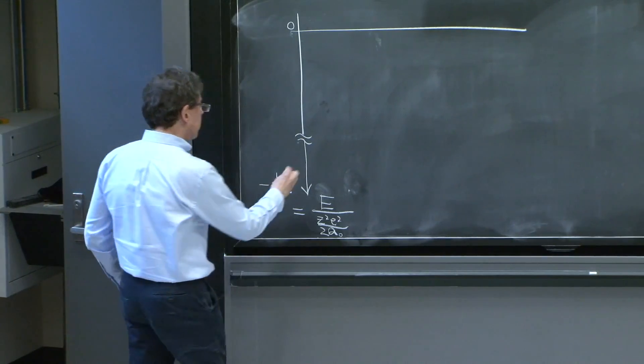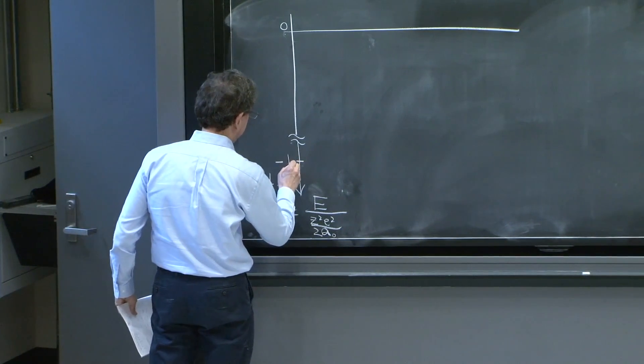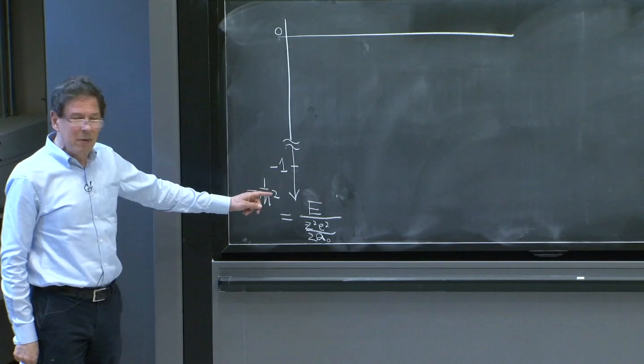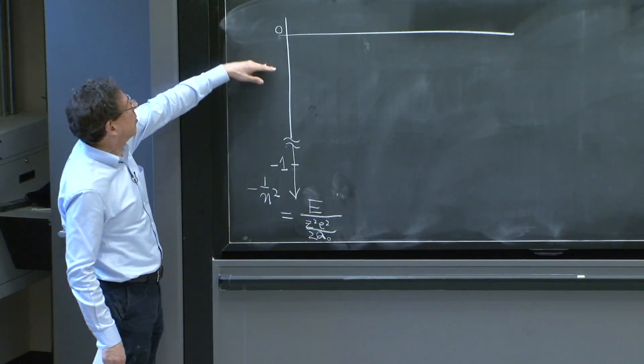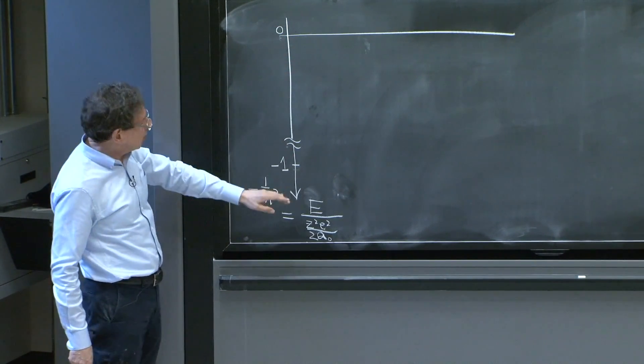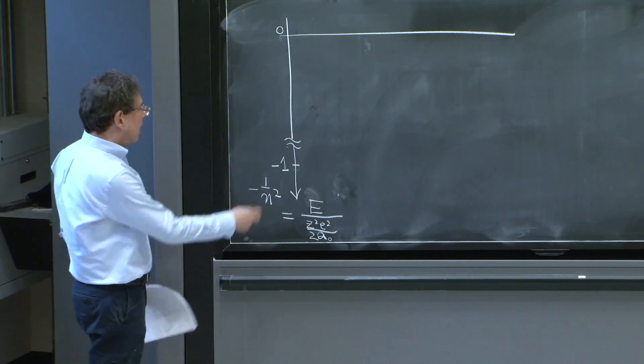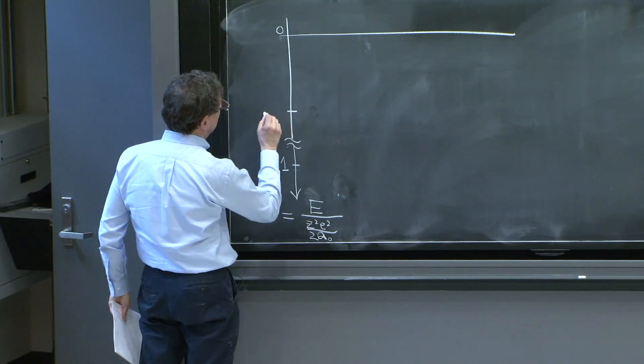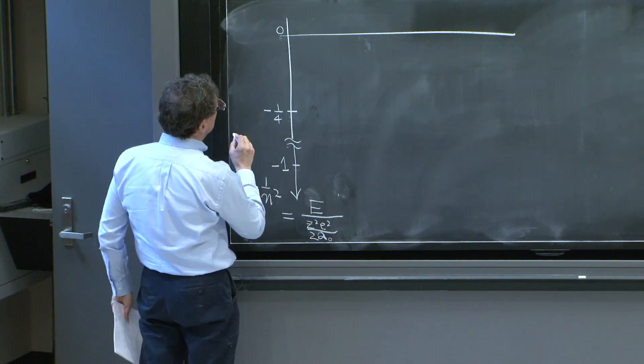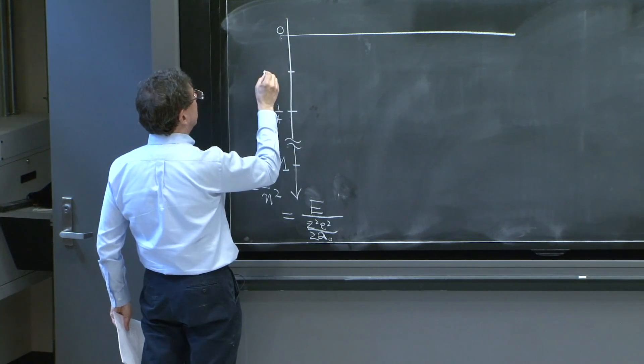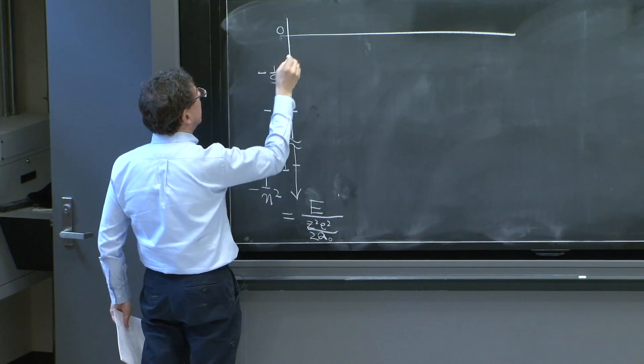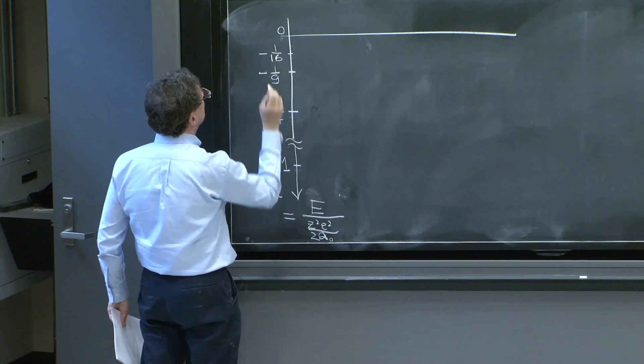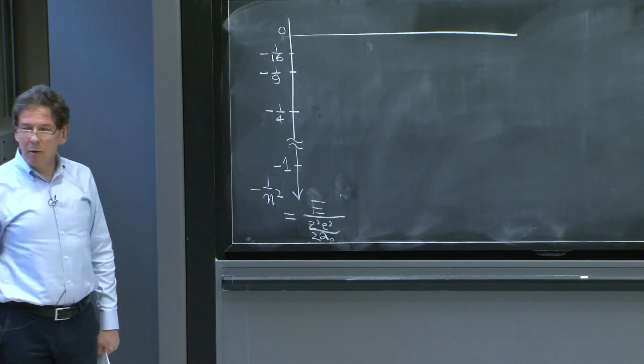So there's n squared. And the levels go like 1 over n squared, indeed. So there's minus 1 here. And then goes to minus 1 quarter for n equals 2, minus 1/9, minus 1/16. And they crowd here. That's why I don't do everything in scale. I cut the scale here, otherwise the diagram is very long. And you can put the minus 1 quarter here. The 1/9 would be here, minus 1/9, minus 1/16, somewhere here. Those are places where you have energy levels.